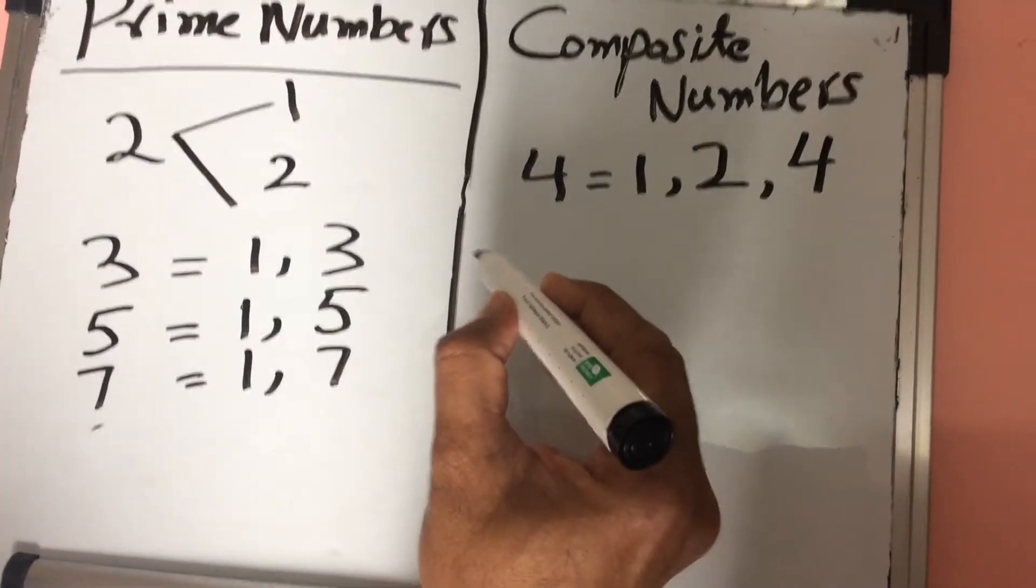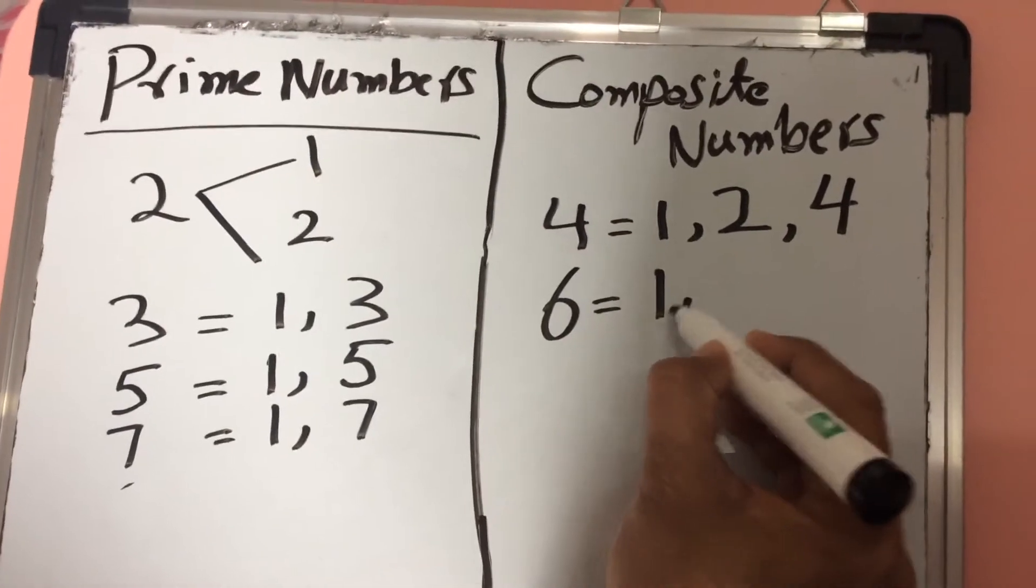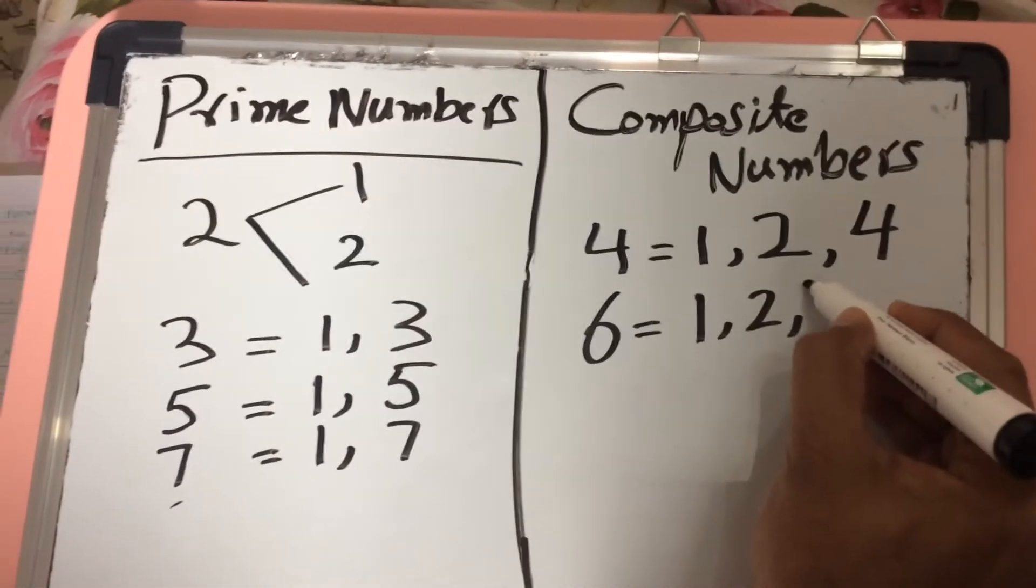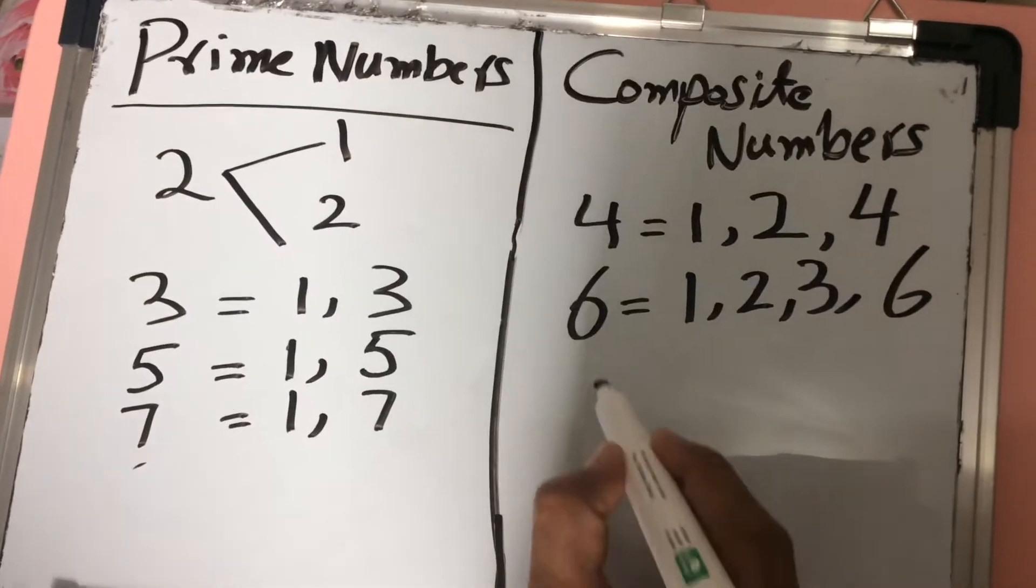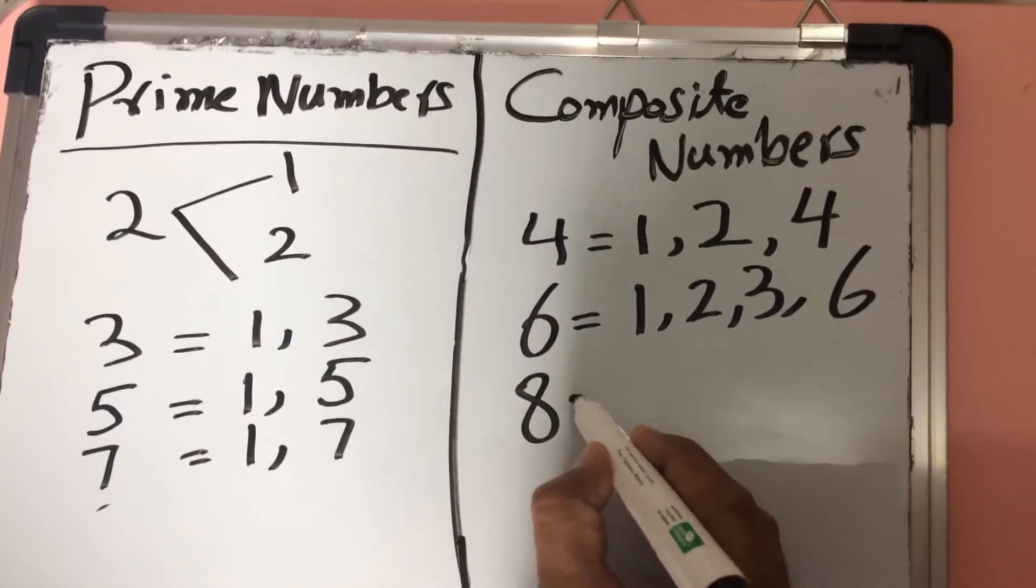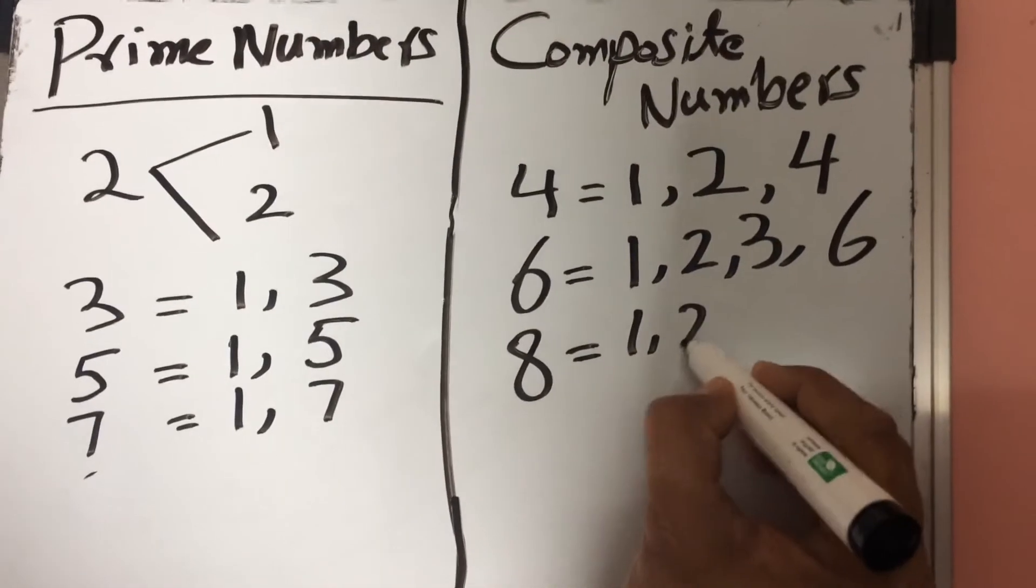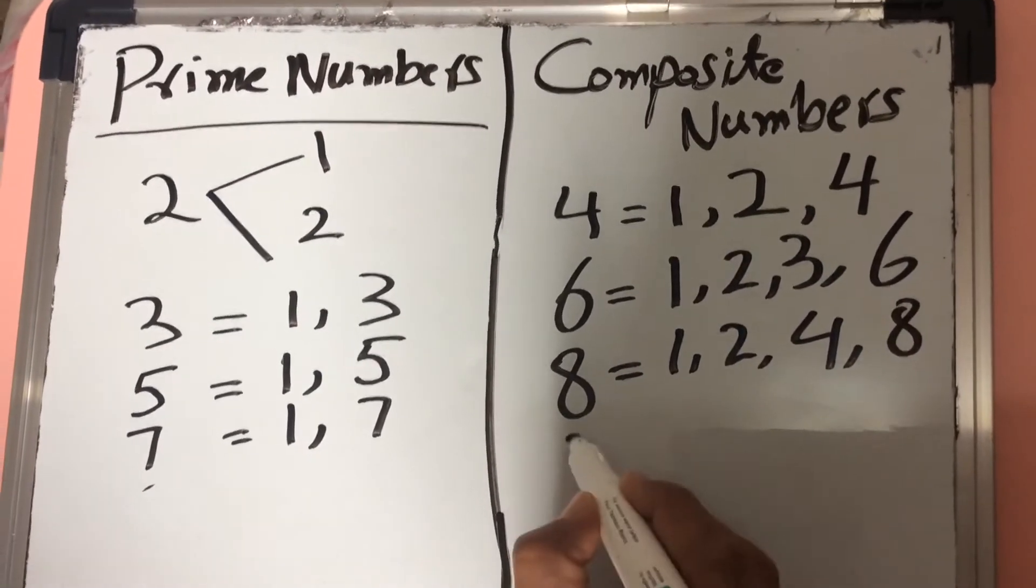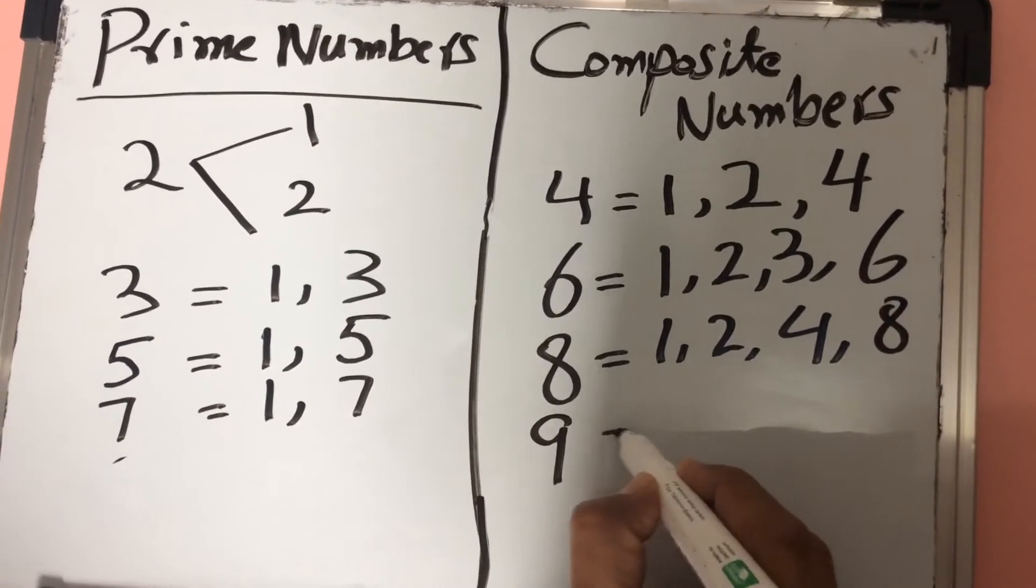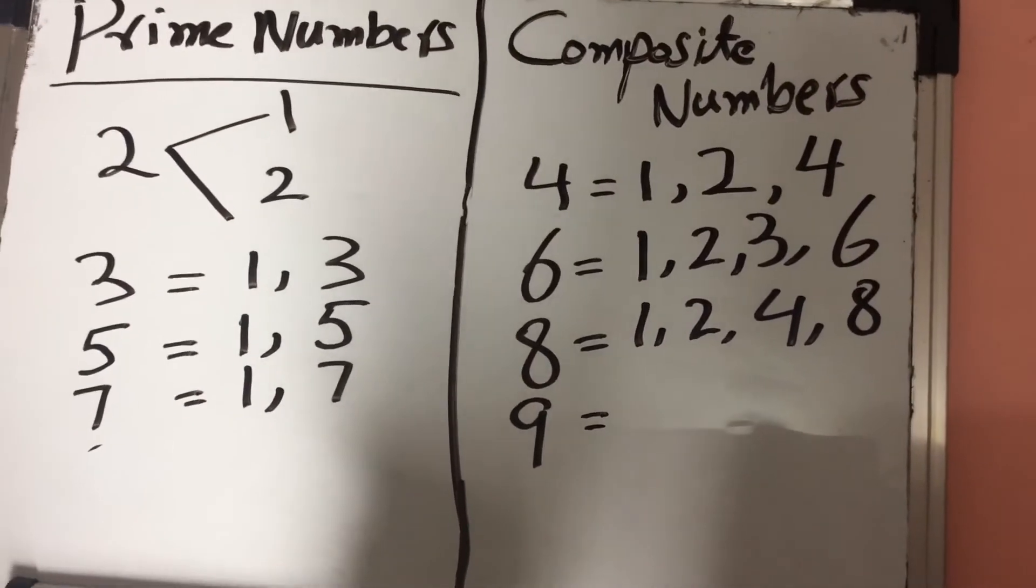Next consider 6. How many factors does it have? 1, 2, 3, 6. Next example is 8. How many factors does it have? 1, 2, 4, 8. Now consider 9. 9 is also a composite number because it has more than 2 factors.